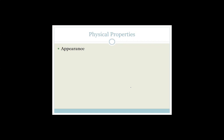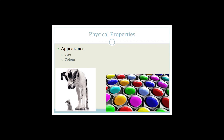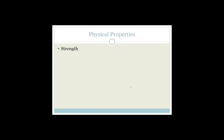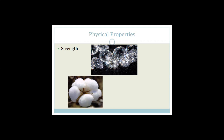Let's talk more about physical properties. The first physical property is appearance — what does it look like? Is it big or very small? We want to talk about size, color, and texture — is it shiny, smooth, or rough? Then there's strength — is it very strong, can it withstand high pressures? Diamond is one of the strongest materials in the world; we actually use diamonds to cut other materials. Or is it soft and fluffy like cotton wool?